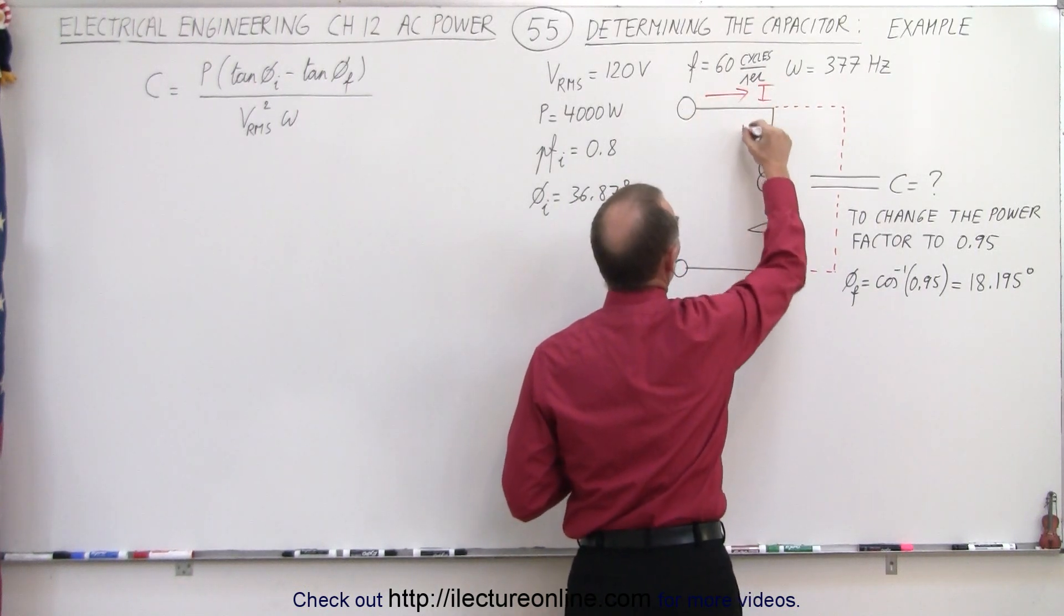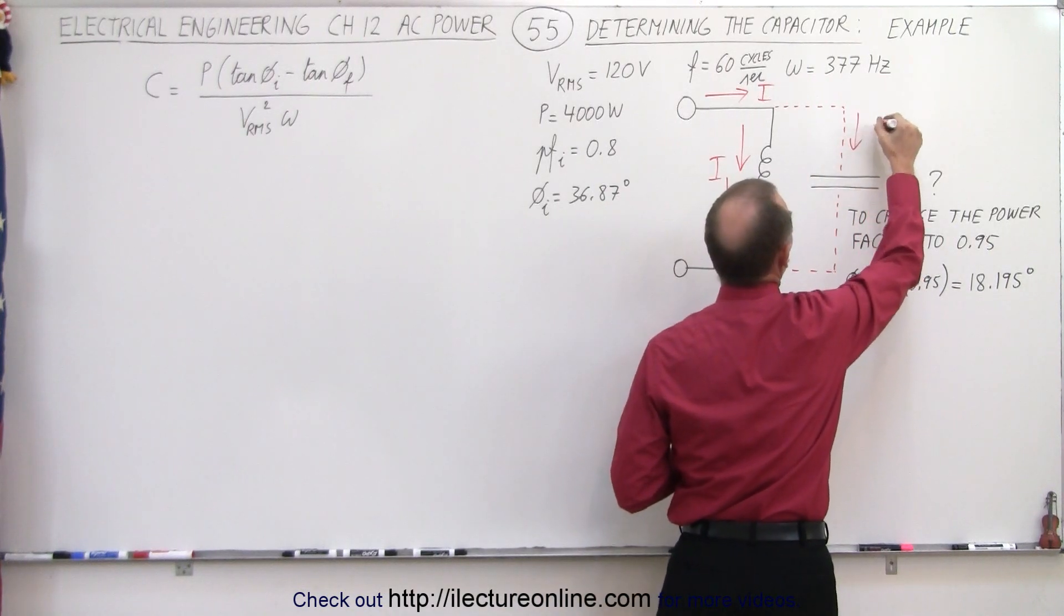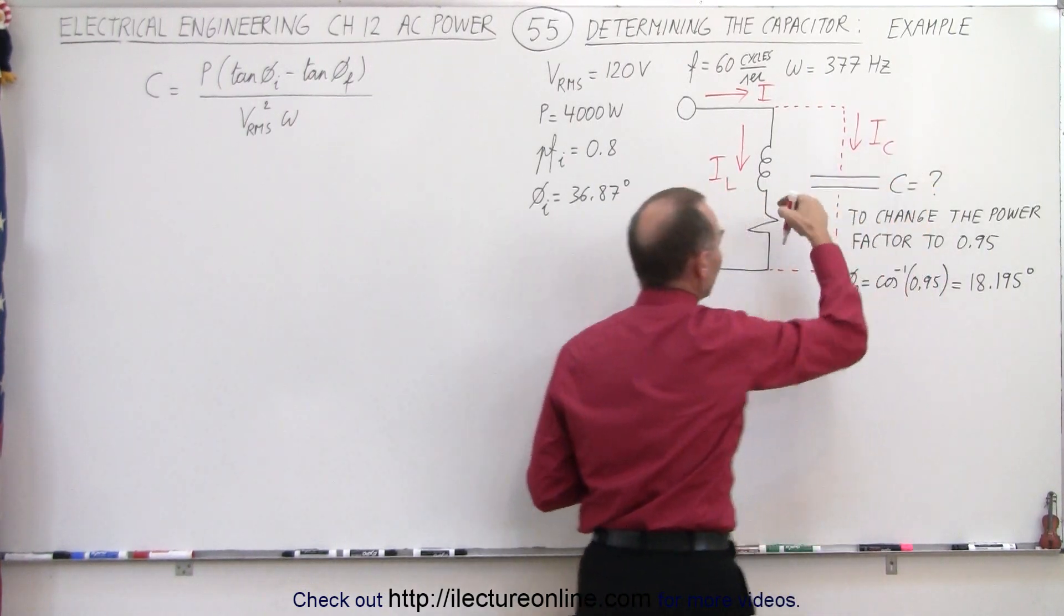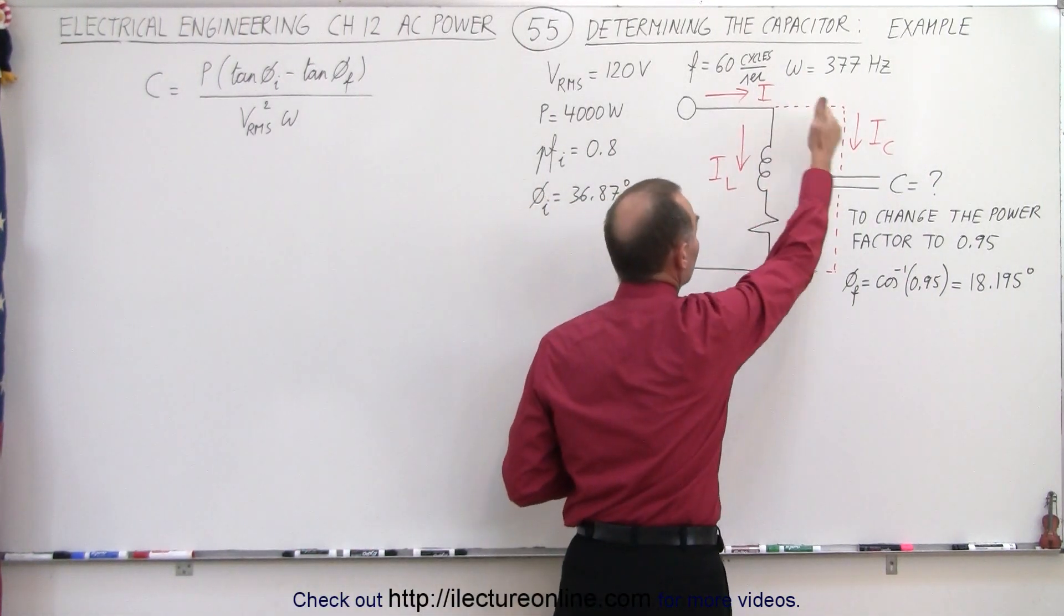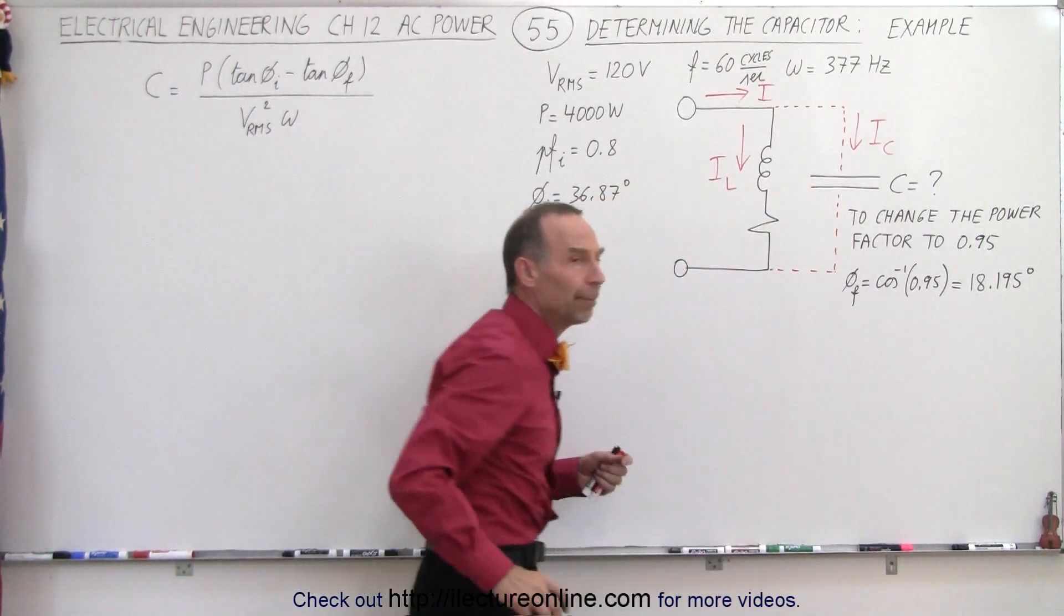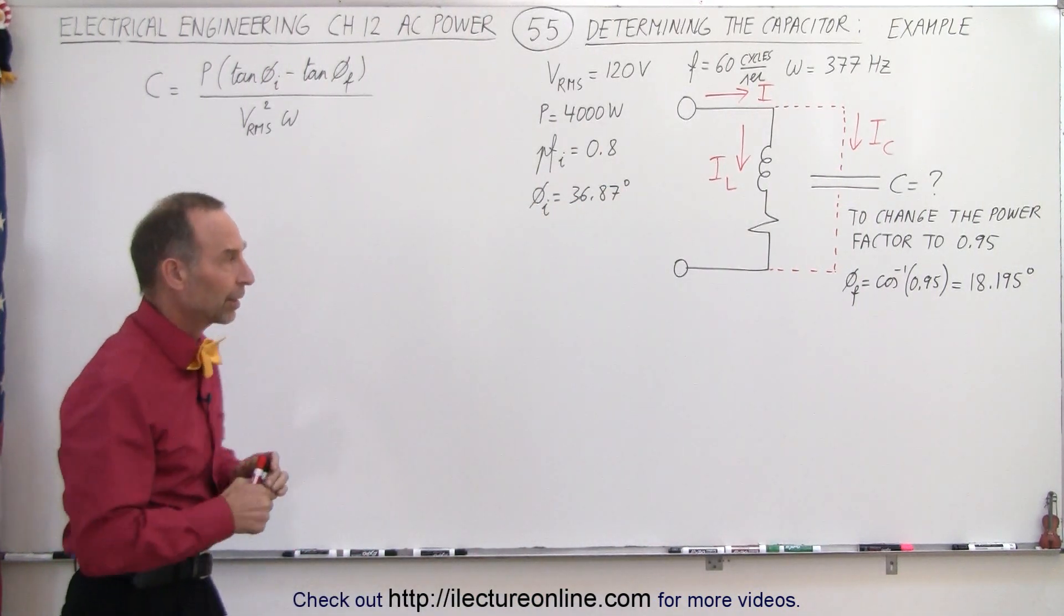So this is the current that we get from the source, we have the load current, and then we have the current going through the capacitor. And since there's a big phase difference between those two currents, we can actually reduce the incoming current by picking the right capacitor.